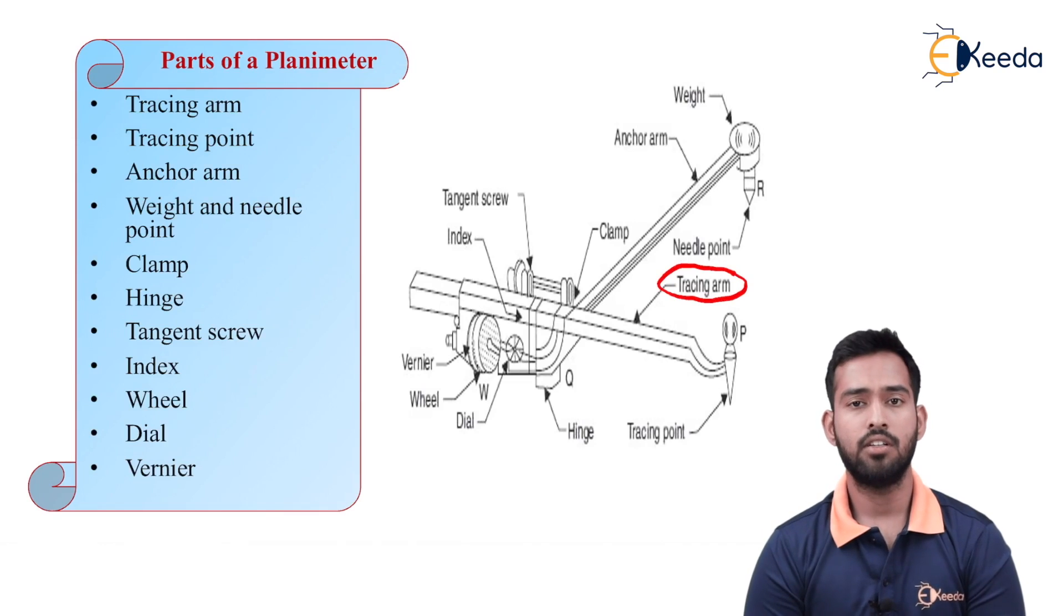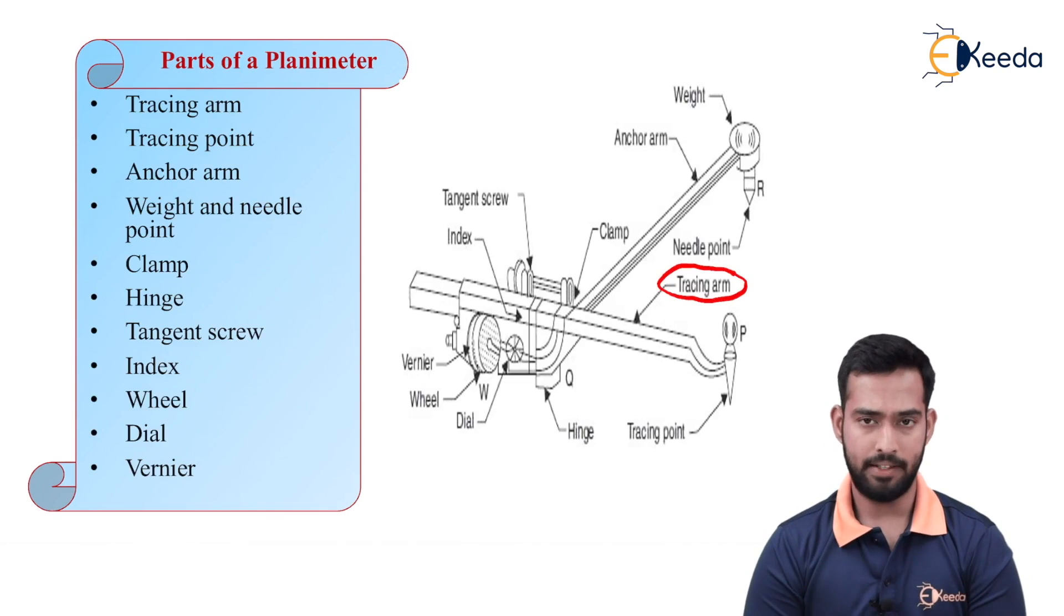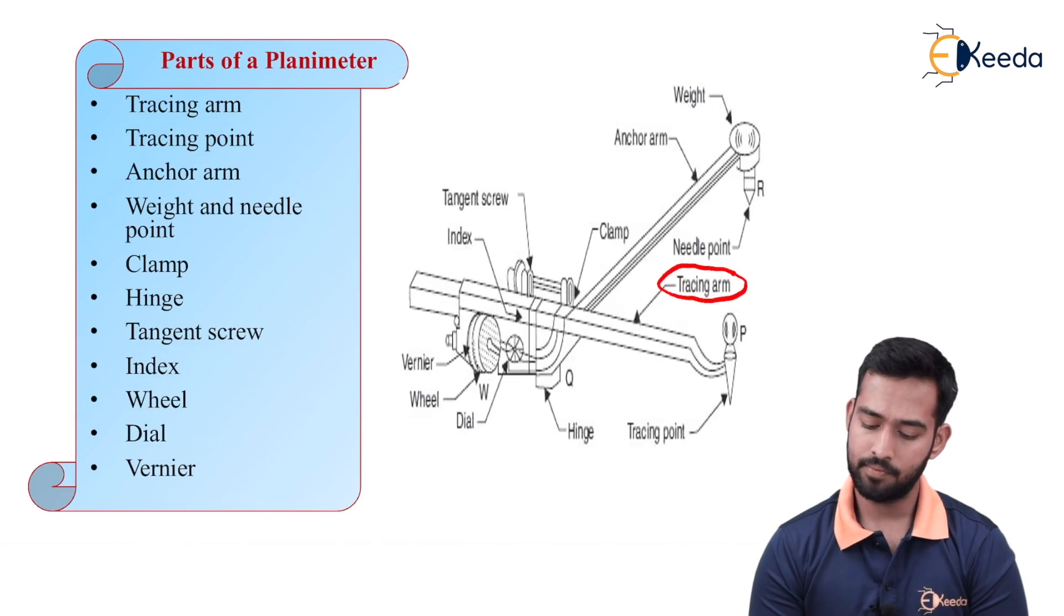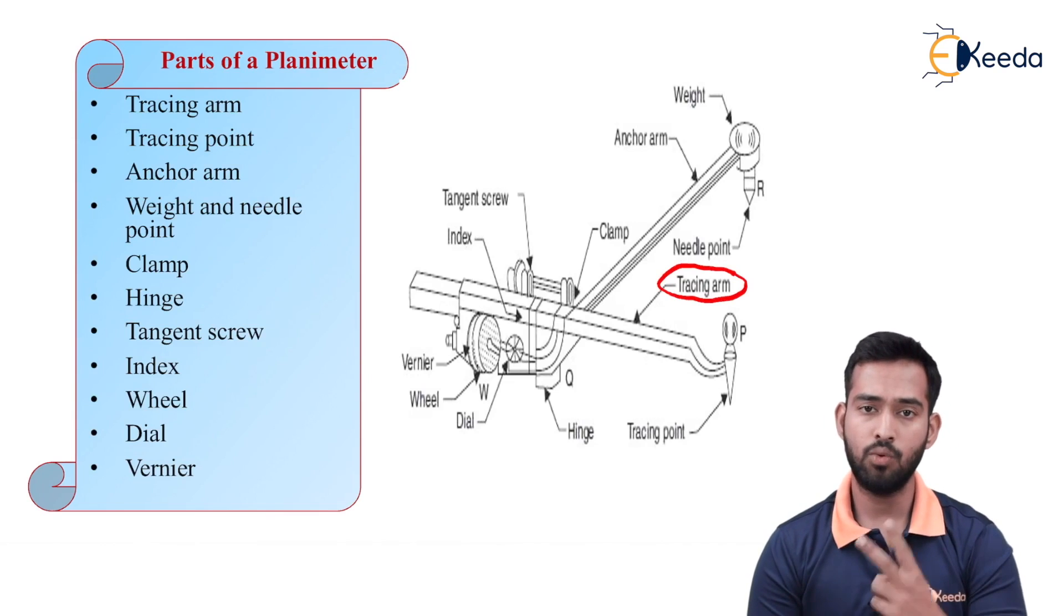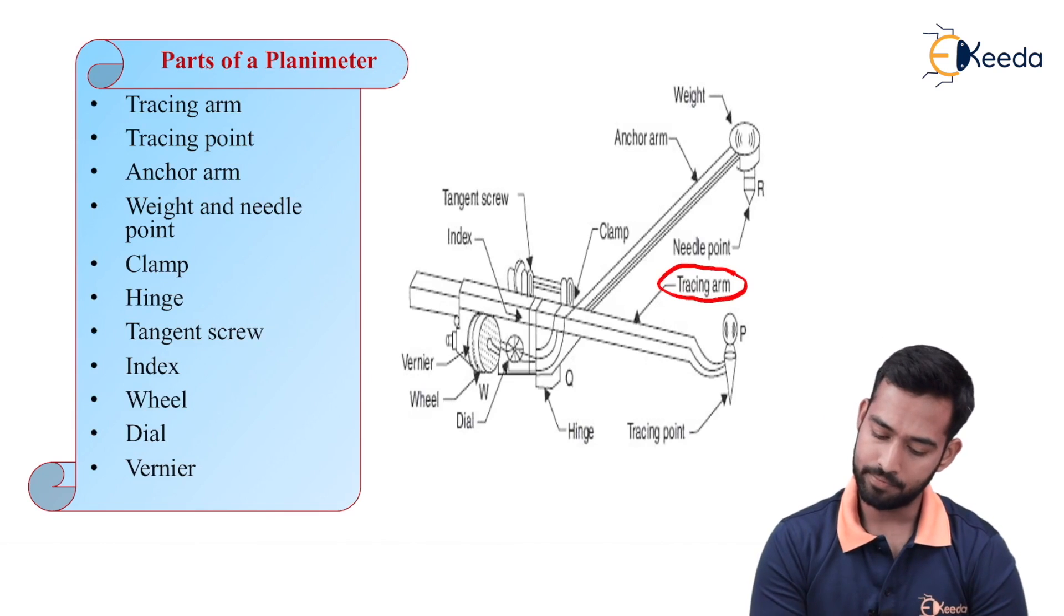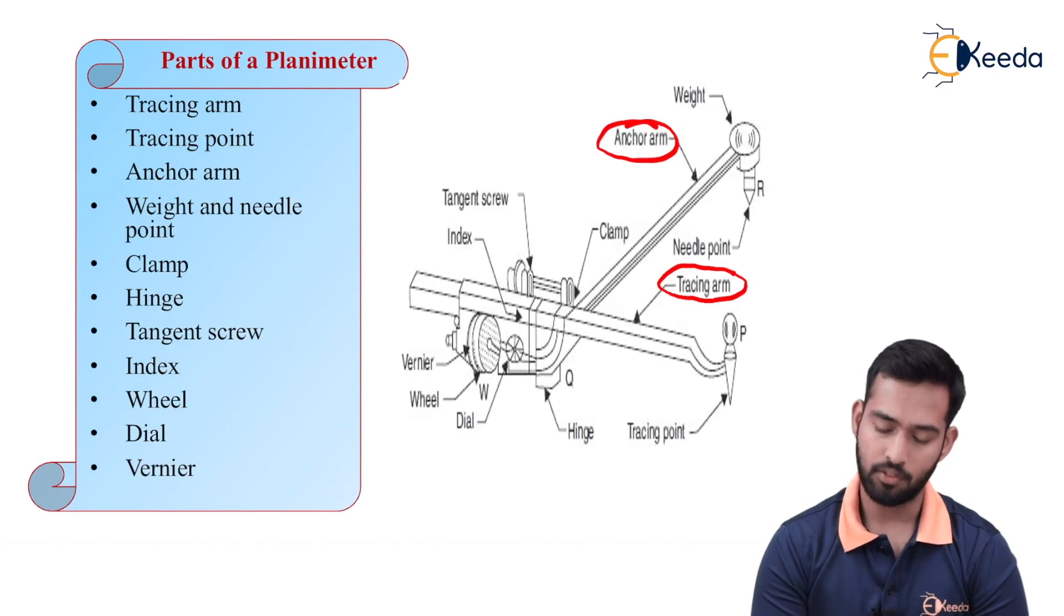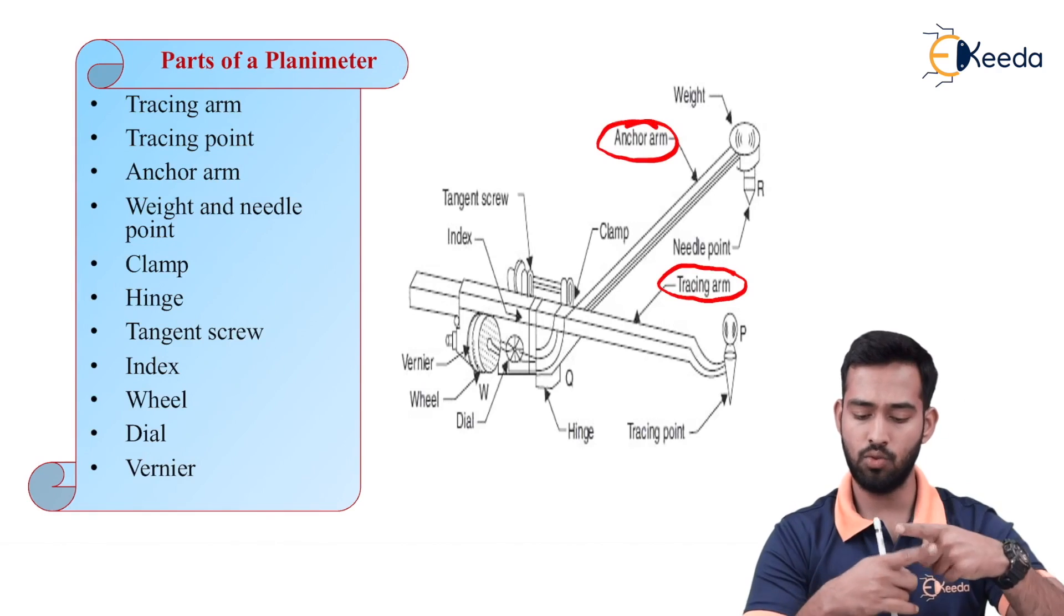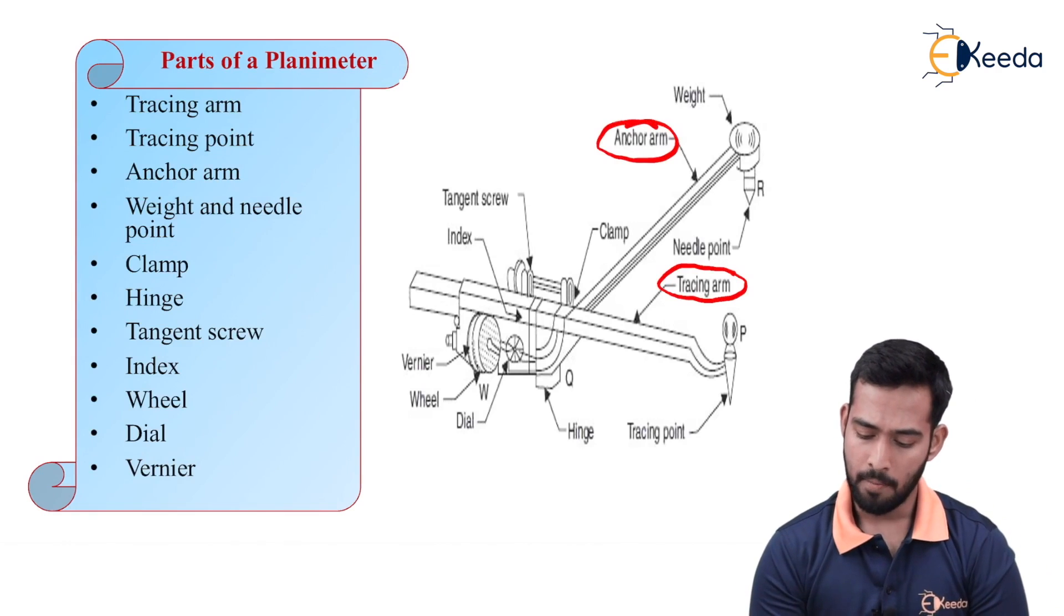We are talking about polar planimeter. So tracing arm. We have two arms, tracing arm and lever arm. This is also known as anchor arm. These are two arms. We have to connect these two arms together by using hinge adjustment over here.